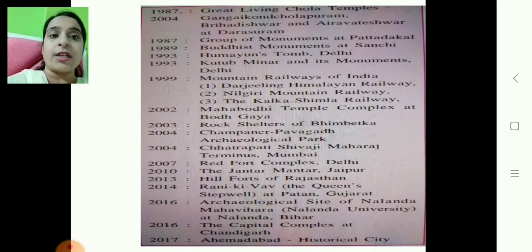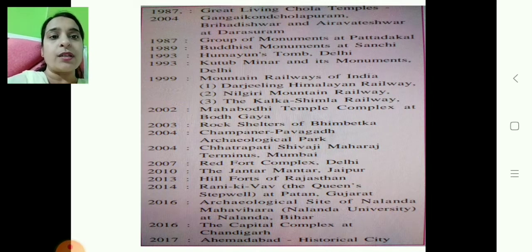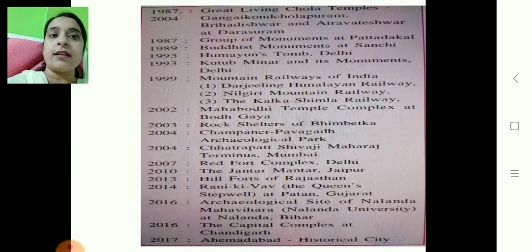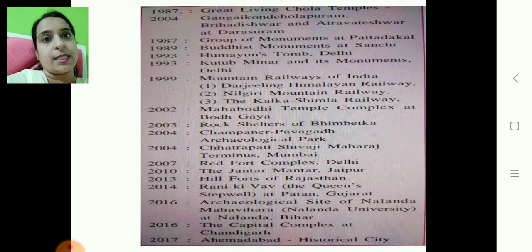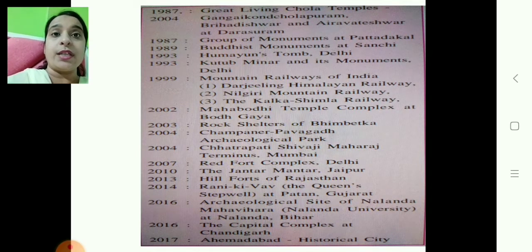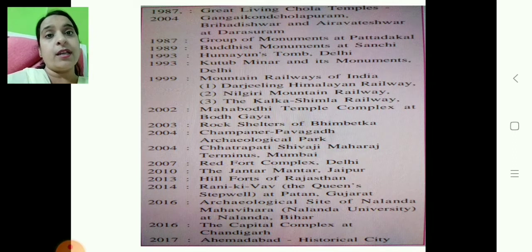In 2013: Hill Forts of Rajasthan. In 2014: Rani Ki Vav — the Queen's Stepwell at Patan, Gujarat. In 2016: Archaeological Site of Nalanda Mahavira — that is Nalanda University at Nalanda, Bihar — and the Capitol Complex at Chandigarh. In 2017: Ahmedabad Historical City. These are all the world cultural heritage sites in India — you have to remember them very carefully.